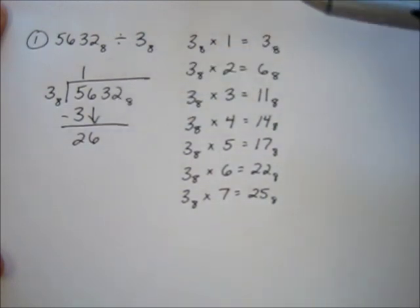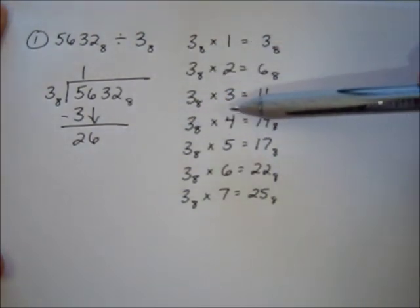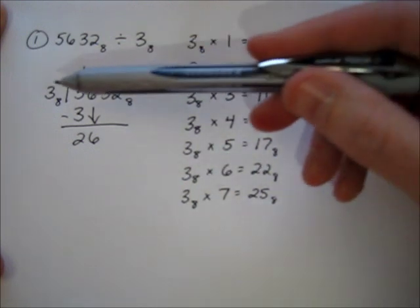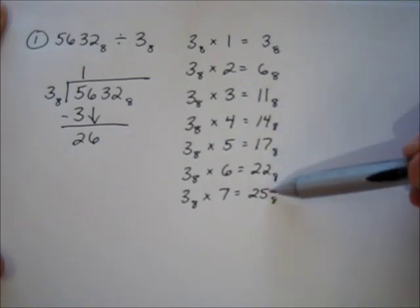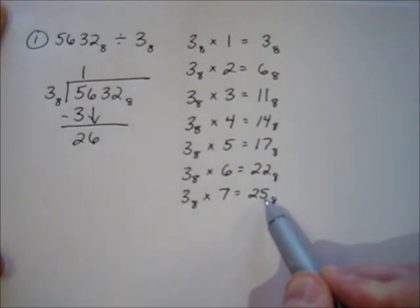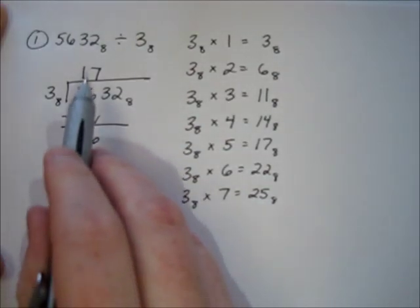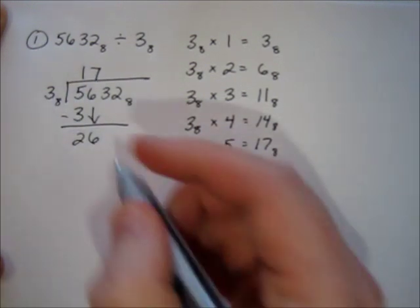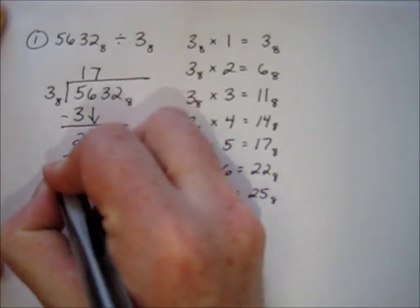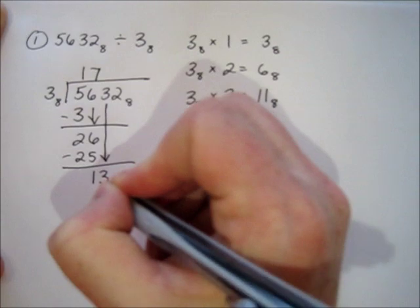When you say how many times does 3 go into 2 6, that's where we're going to use our chart. I know that 3 times 1 is 3, 3 times 4 is 14, and 3 times 6 is 22. How many times will 3 go into 2 6? I'm looking for the largest thing in this list that's still smaller than 2 6, and 2 5 fits that bill. So the answer is 7. 3 goes into 2 6 seven times. Now we multiply: 7 times 3 is 2 5. Subtract, we get 1, and bring down the 3.